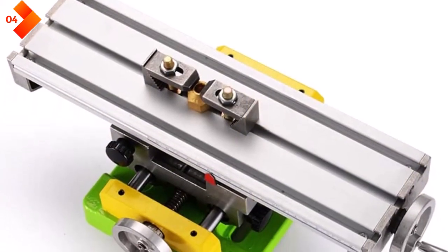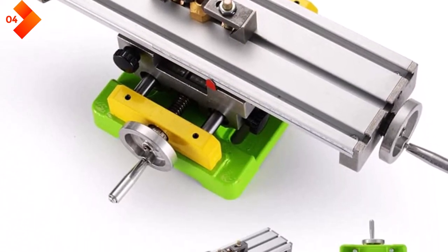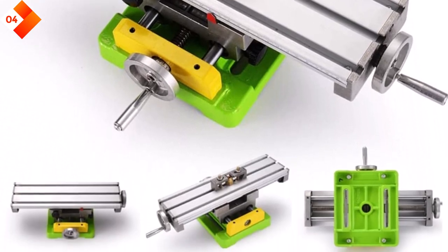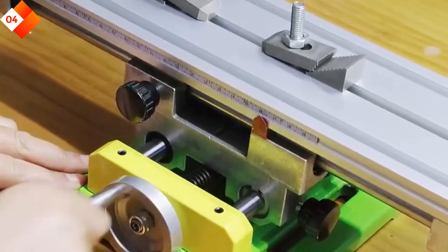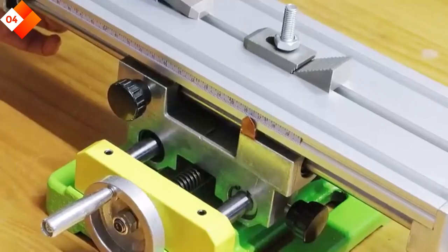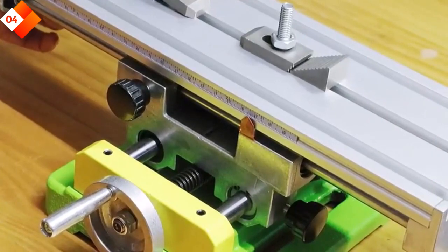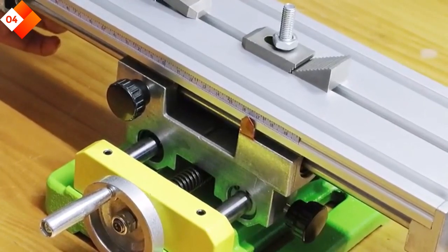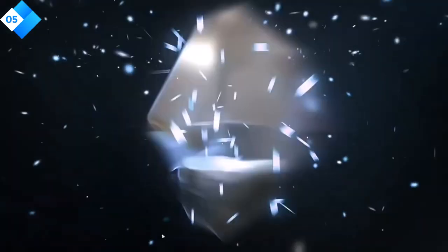Pros: stable and adjustable platform for precise positioning, adjustable X and Y axis for easy workpiece movement, calibrated hand wheel for precise adjustments, made of high-quality aluminum alloy for durability, compatible with most drill presses and milling machines. Cons: may require additional clamps or fixtures for certain workpieces.